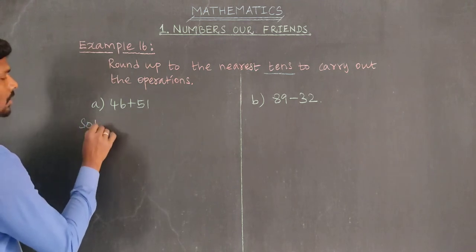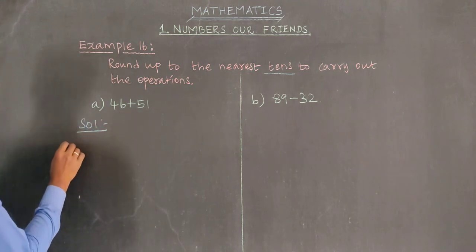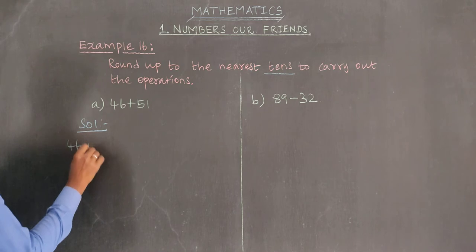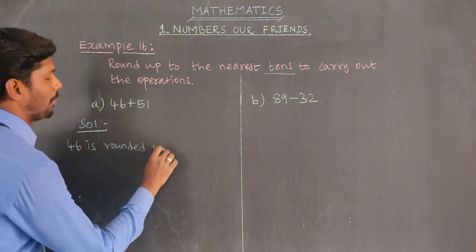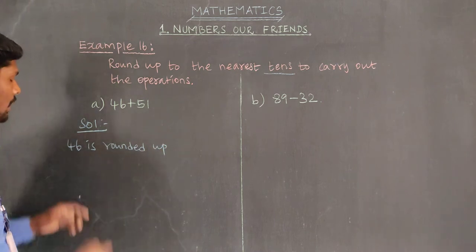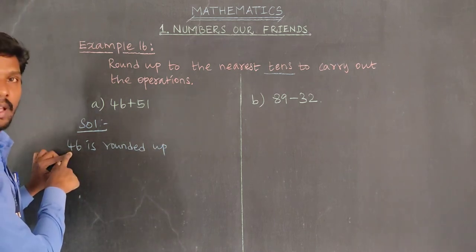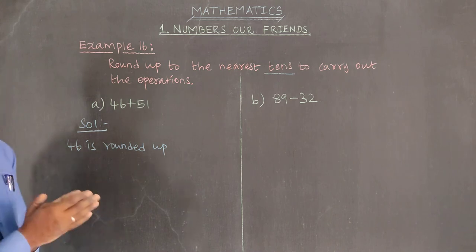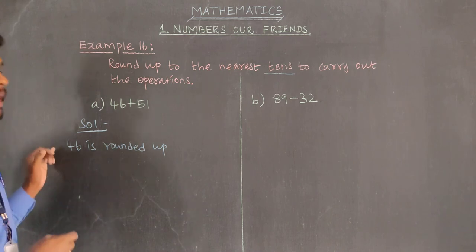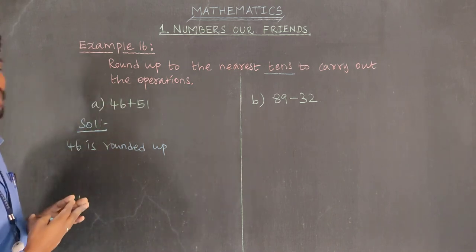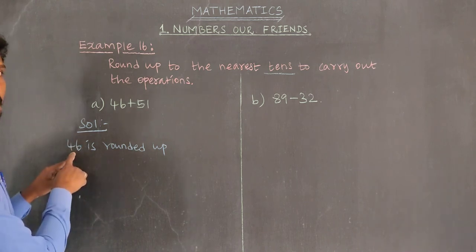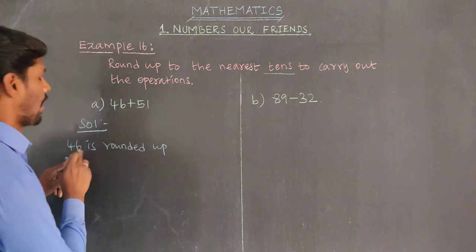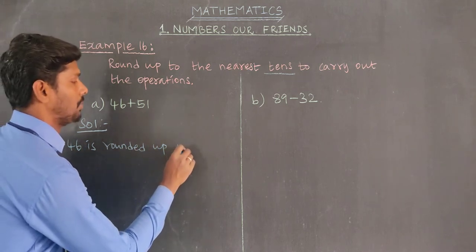Solution. Part A says round up. Why round up? Above 45 is 50. 46 rounded up is 50.